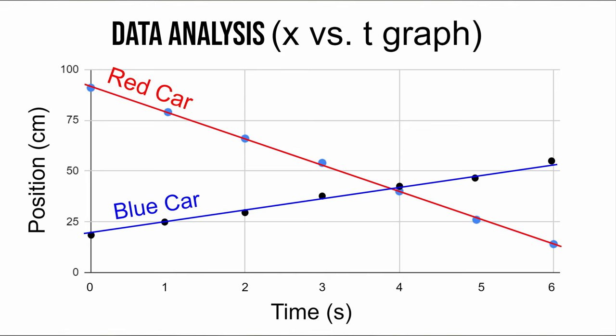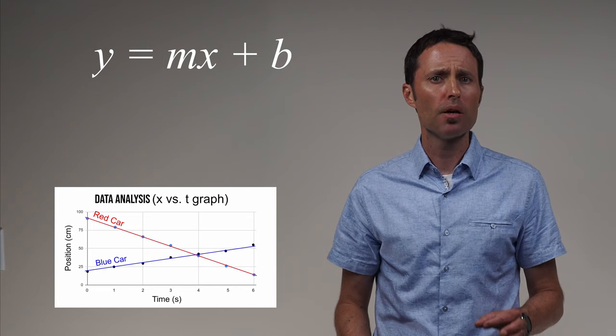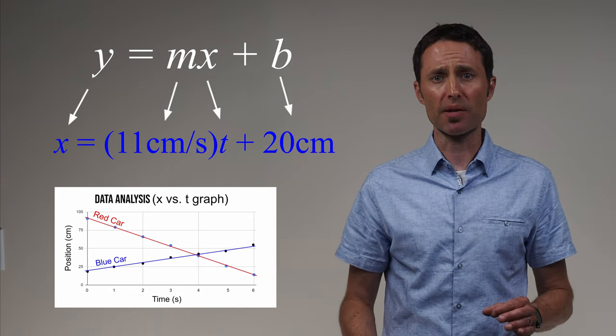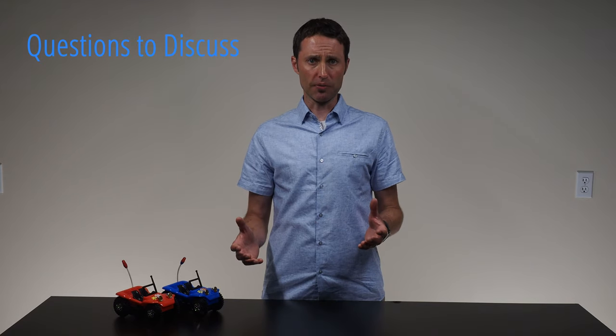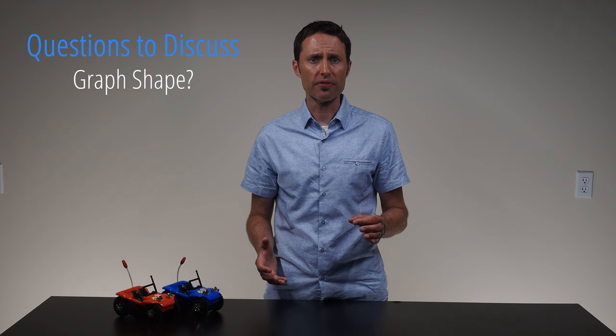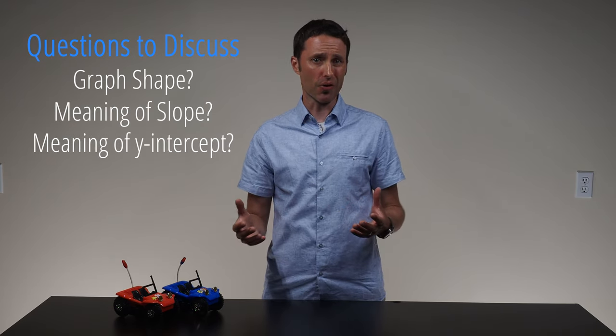Analyze the collected position and time data. Have the students graph their data by placing the position values on the y-axis and the time values on the x-axis. Show students how they can write an equation from their graph, showing the algebraic relationship between the position and time for their car. Any linear relationship can be written in the form of y equals mx plus b, but you want your students equations to include the specific variables and values from the graph of their specific data. Ask each lab group to discuss the shape of their graph and the significance or meaning of both the slope and the y-intercept of their graph and their equation.